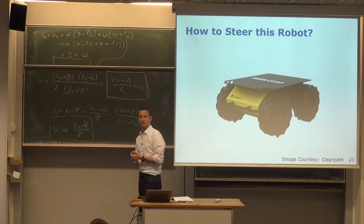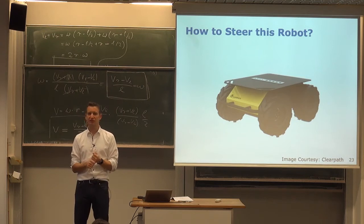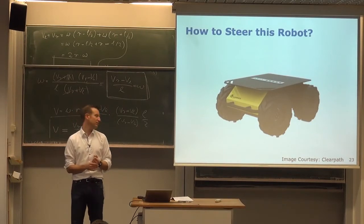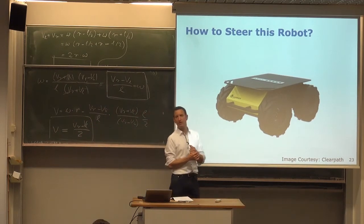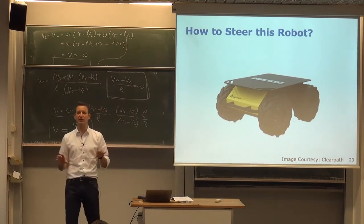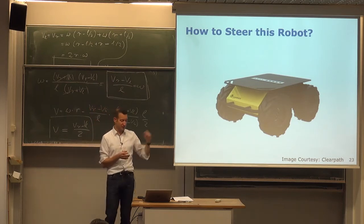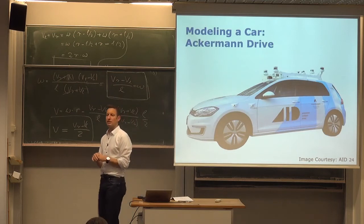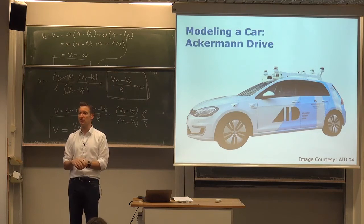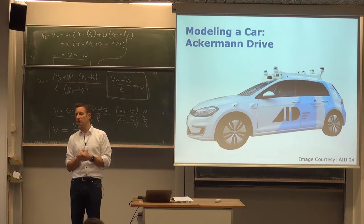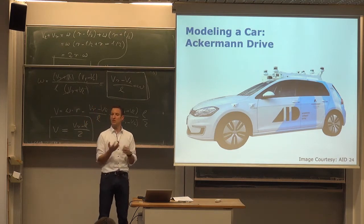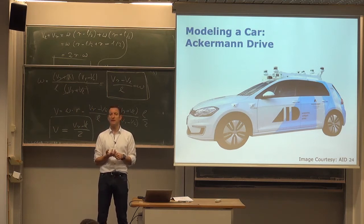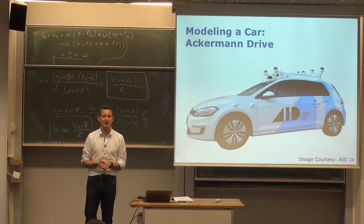In summary: the differential drive is the standard, beautiful, easy-to-model, easy-to-build platform often used for indoor navigation systems. We described all the basic laws of motion as long as we are not sliding. Next, after a five-minute break, we will look at what happens with a car-like vehicle — the Ackermann drive — where we can't directly control rotational velocity and need to approach things differently.